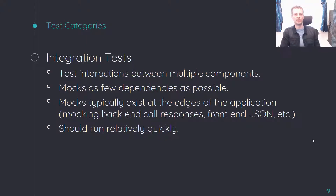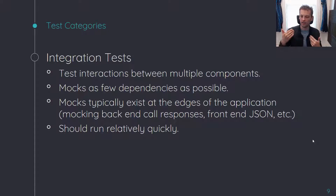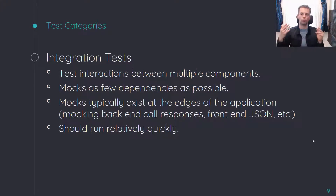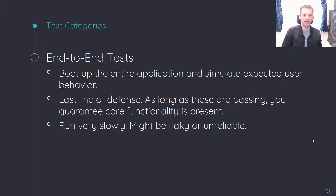At the next level, we have integration tests. These test the interactions between multiple modules and mock as few dependencies as possible. Generally speaking, for a front-end test, you might mock your external calls to your back-end, but all of your code is going to be running as realistically as possible. These should run relatively quickly — slower than your unit tests, but still faster than end-to-end tests.